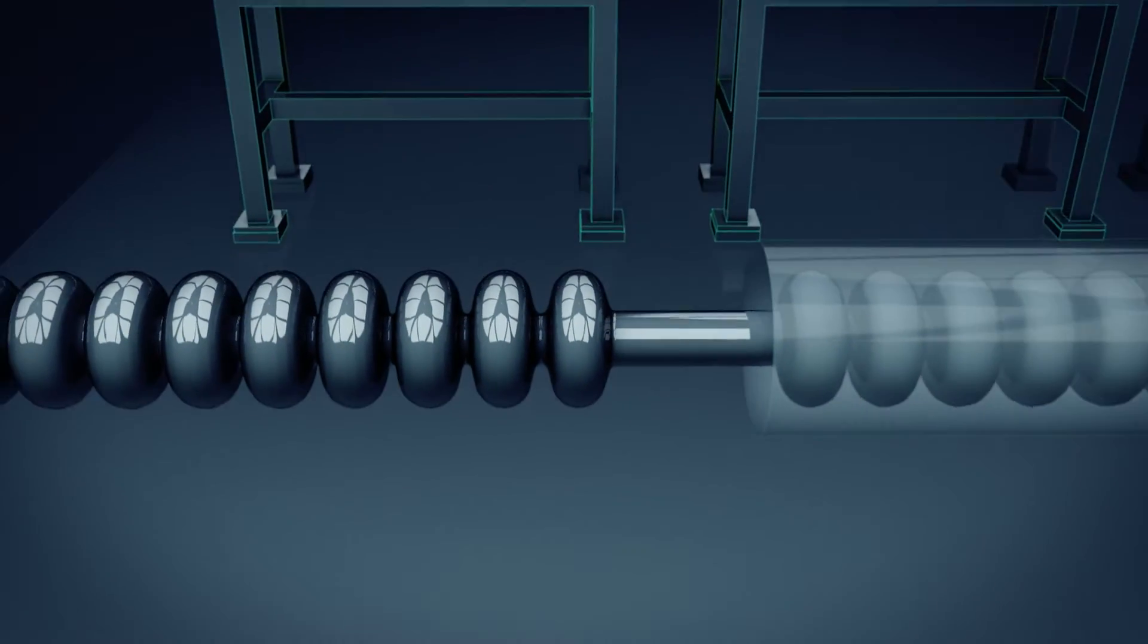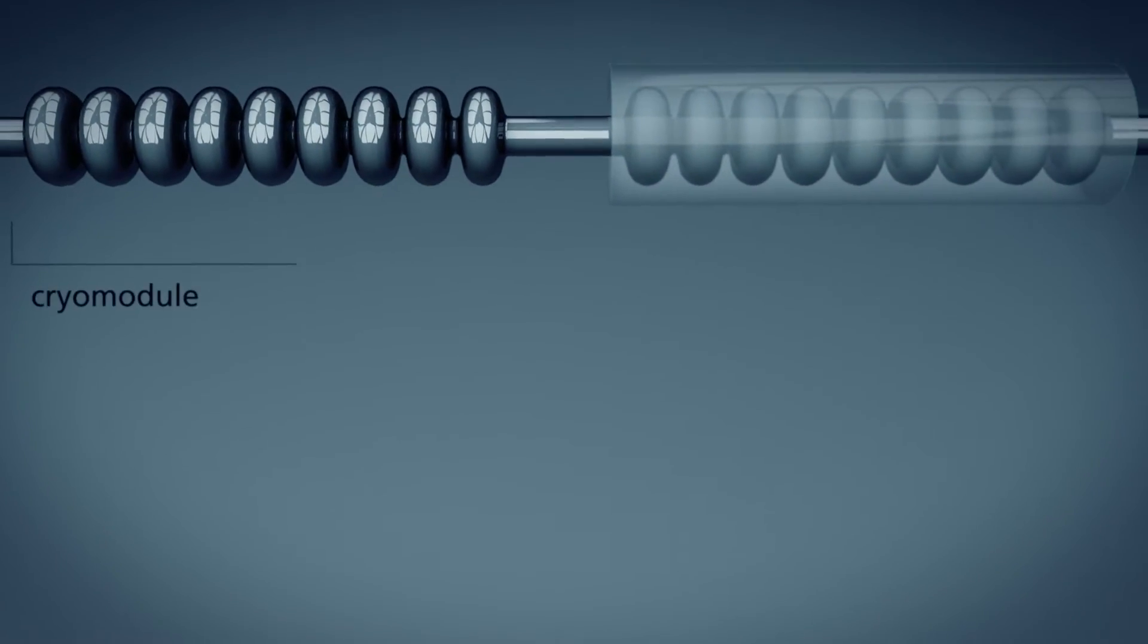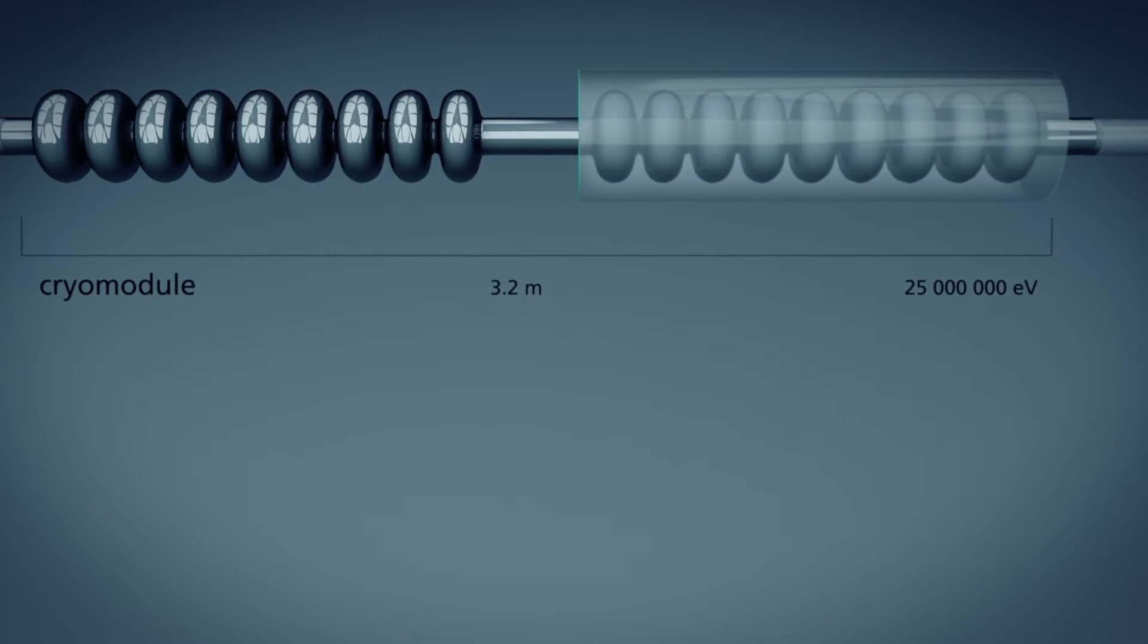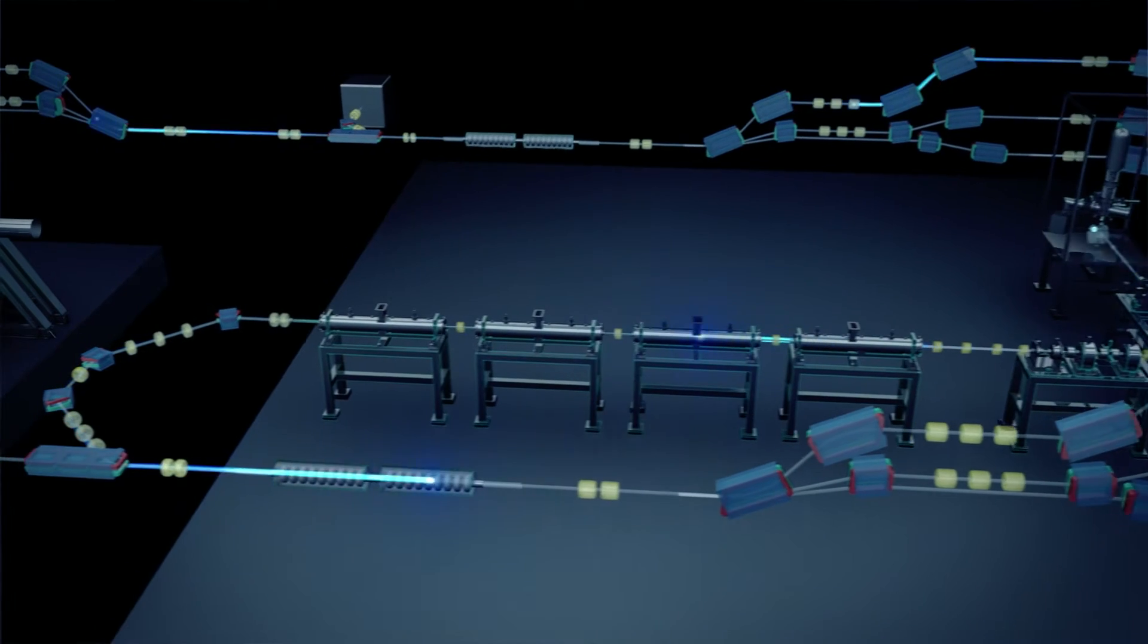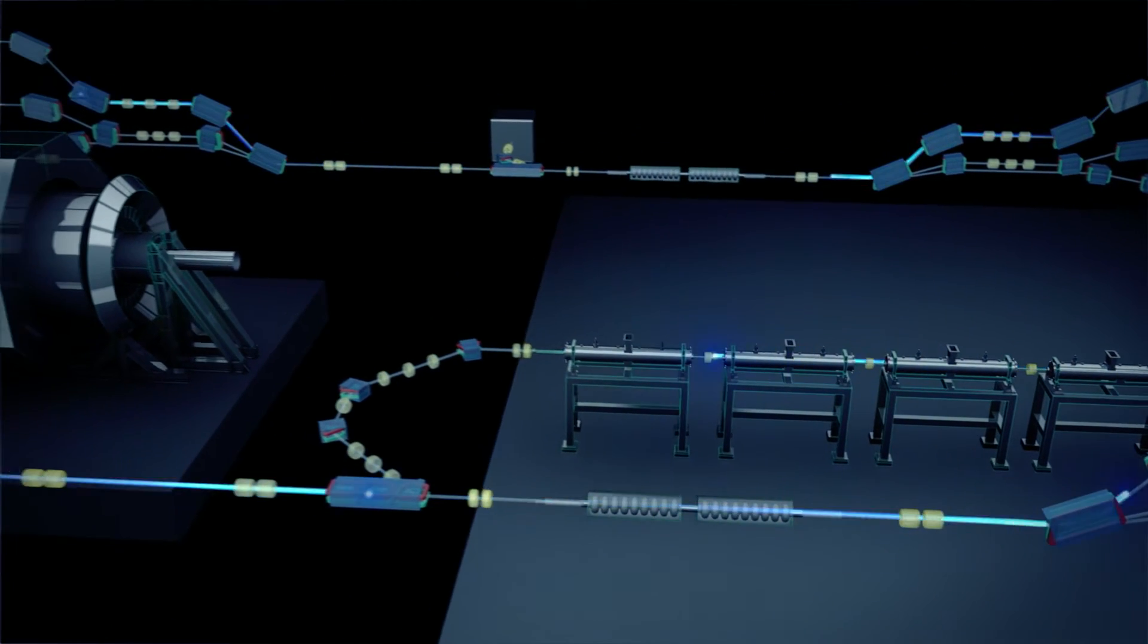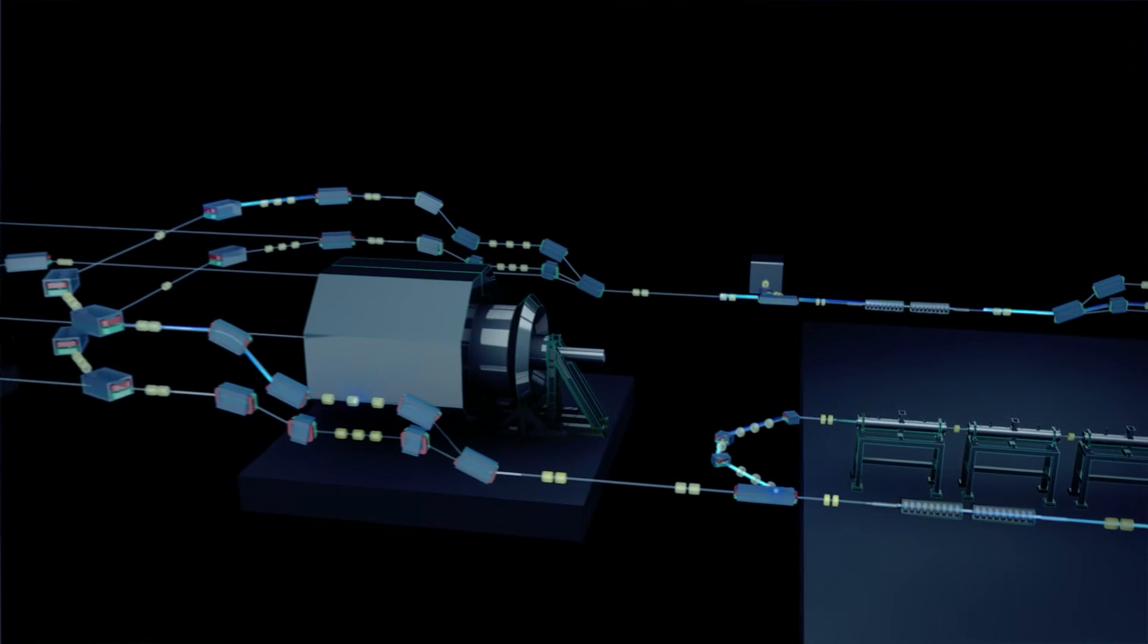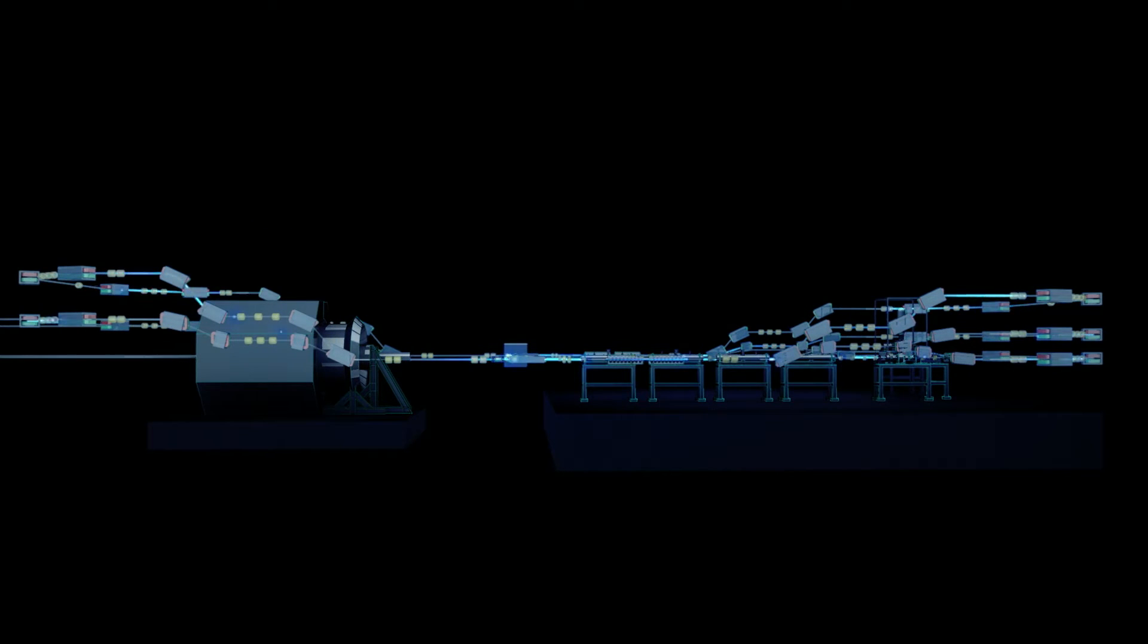In each cryomodule, the electrons gain an energy of 25 MEV. The electron beam then passes through the top arc to the following cryomodule. With increasing energy, the beam is bent less and continues through the central arc.